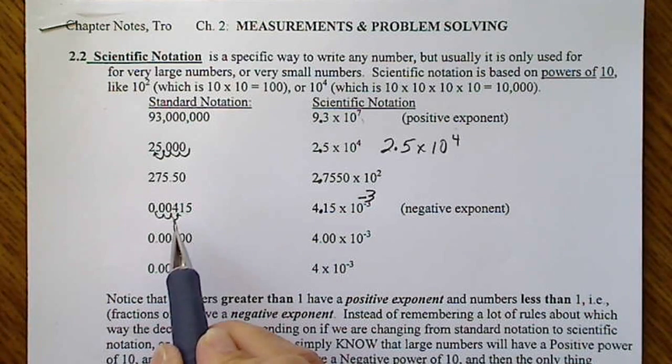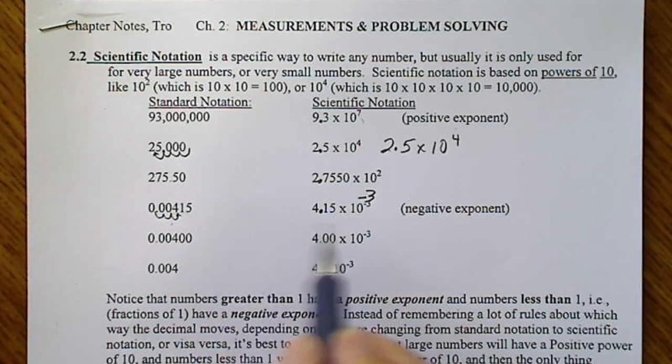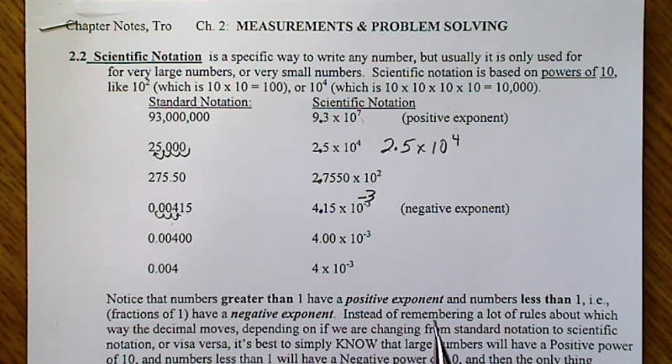And again, that number is less than 1, and all small numbers are going to have negative powers of 10.